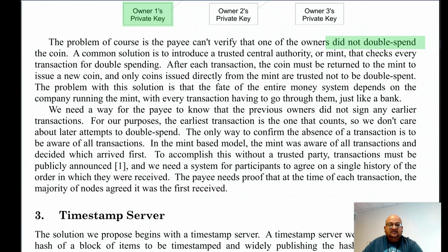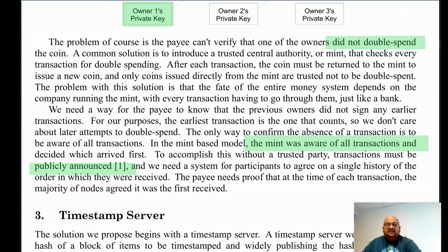However, we still crucially need to prove the absence of double spending. In the model where there was a trusted third party, that trusted third party was aware of all transactions, and hence it could tell if a coin was being spent a second time. How would you do this in a purely peer-to-peer fashion? The idea at a high level is to announce all transactions publicly and then create a mechanism for all participants to agree collectively on a history of all transactions, so we can check that no coin has been spent more than once.